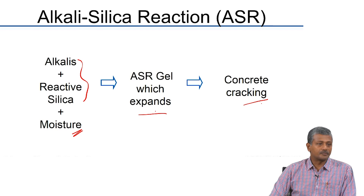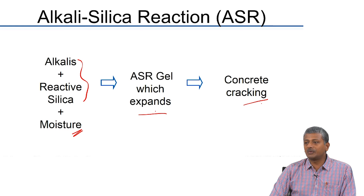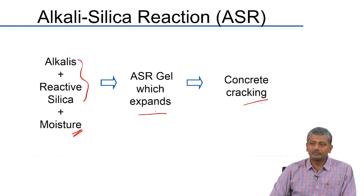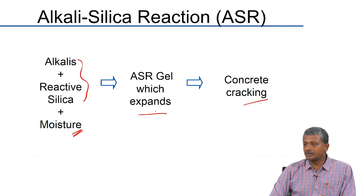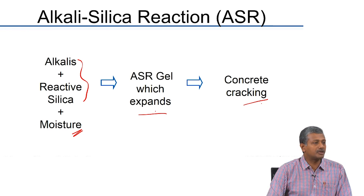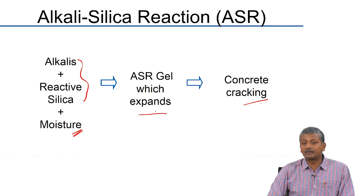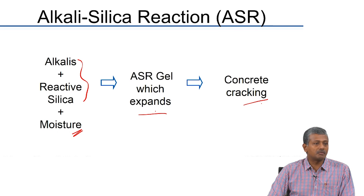This process is very slow. The reaction between alkalis and silica happens over several years, and by the time you see a concrete subjected to ASR start cracking, it is already around 20 to 25 years. So most of these cracks will show up only after a period of 20 to 25 years, which is why it is a lot more challenging to predict whether the given concrete will be susceptible to such cracking.